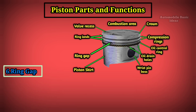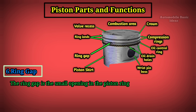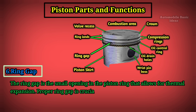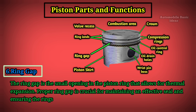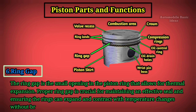Ring Gap: The ring gap is the small opening in the piston ring that allows for thermal expansion. Proper ring gap is crucial for maintaining an effective seal and ensuring the rings can expand and contract with temperature changes without breaking or causing excessive friction.